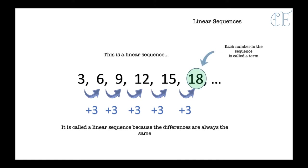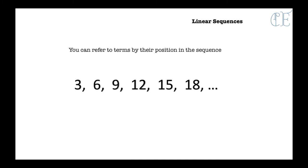Each number in the sequence is called a term. You can refer to terms by their position in the sequence. So if we have 3, 6, 9, 12, 15 and 18, we can label them 1, 2, 3, 4, 5 and 6, because they all have a number which is their position. This is the third term in the sequence because it is the third term: 1, 2, 3.